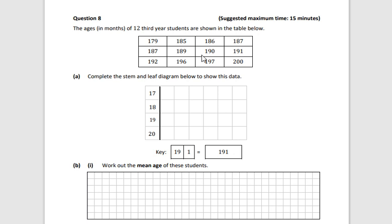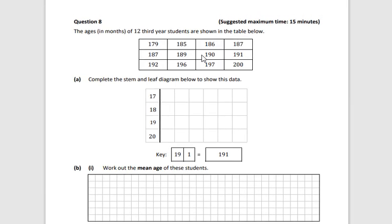Hi folks, this is question 8. We just have to fill in the stem and leaf plot here. So 17, we're looking for numbers up there that start with 17. The only one I think is 179, so put the leaf of the 9 in there.